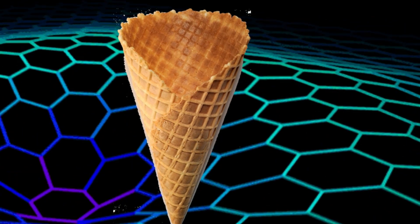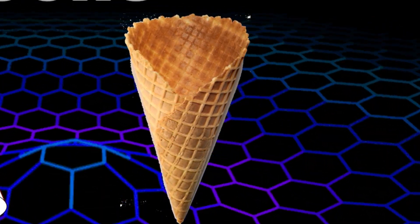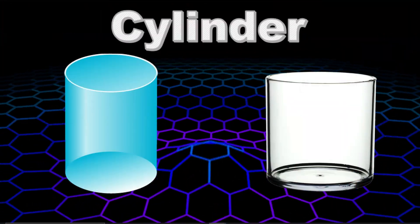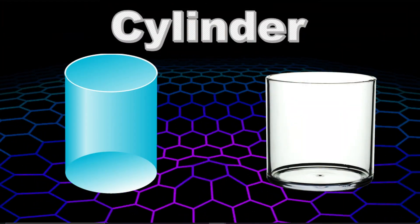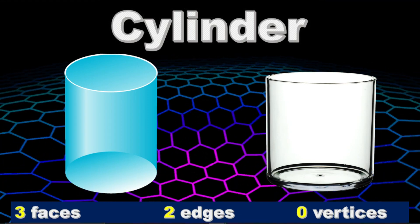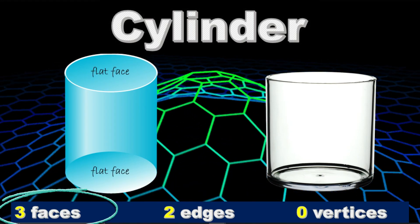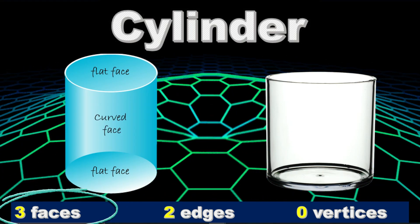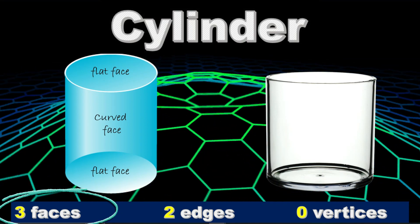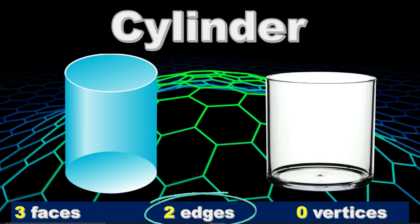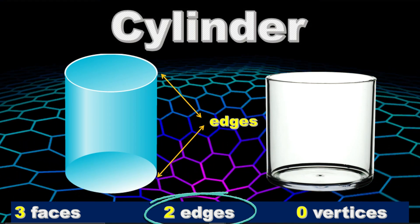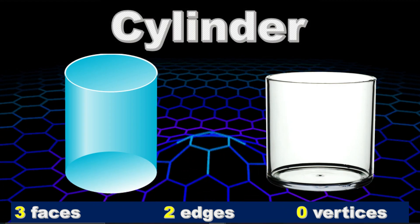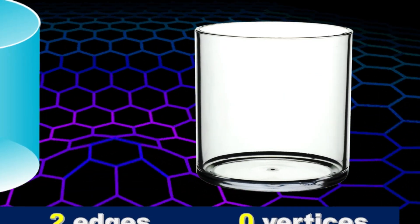I love ice cream! Do you like ice cream too? It's so sweet! Cylinder. Cylinder has three faces, two flat faces, and a curved face. It has two edges and no vertices. An example of a cylinder is this glass.